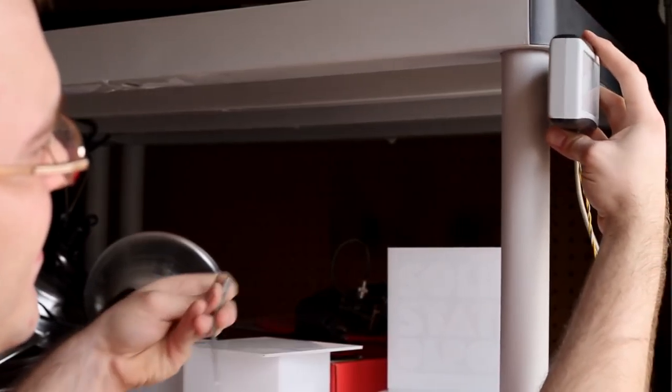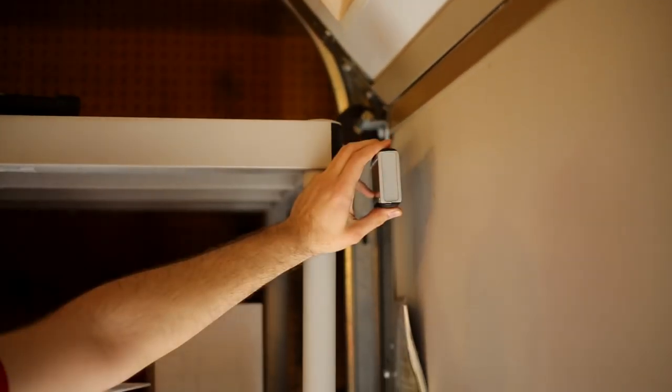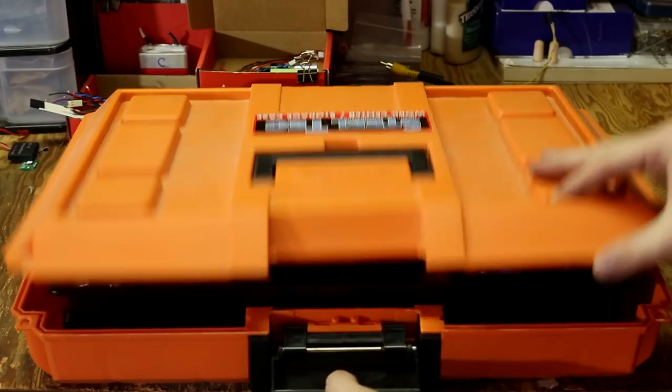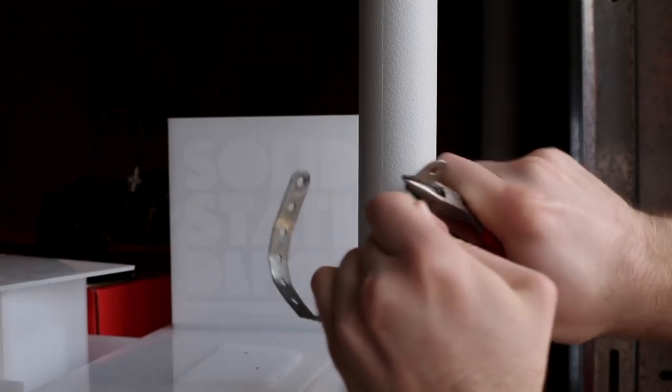Next, I had to mount the enclosure close enough to the door for the RFID reader to pick up the signal but far enough that it would clear the door opening. When it comes to custom bracketry, nothing beats scavenging parts from my old erector set. After a little bending and fitting, the box was mounted.